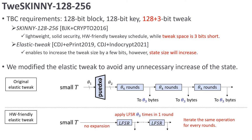Next, I explain the underlying TBC of our DAE. The underlying TBC of LMDAE needs to support a 128-bit block, 128-bit key, 128-bit tweak, and an additional 3-bit tweak for domain separation. SKINNY-128-256 almost meets the requirement of LMDAE; however, the tweak space is 3 bits short. The elastic tweak enables converting existing TBCs to slightly enlarge the tweak size, so we determined to combine these two approaches. However, the elastic tweak was designed to minimize the number of computations by increasing state size, which is not suitable for LMDAE. Hence, we modified the elastic tweak to be hardware-friendly.